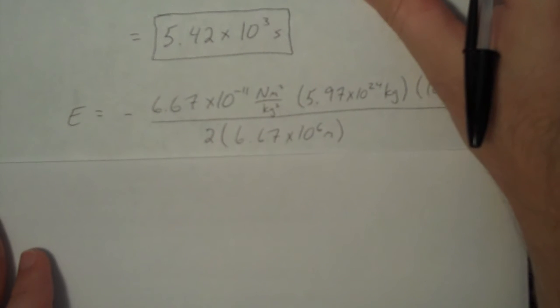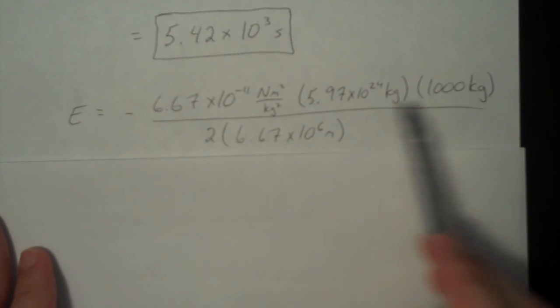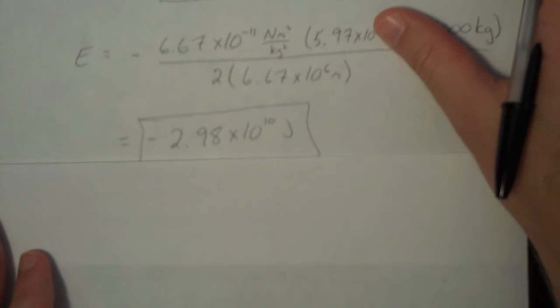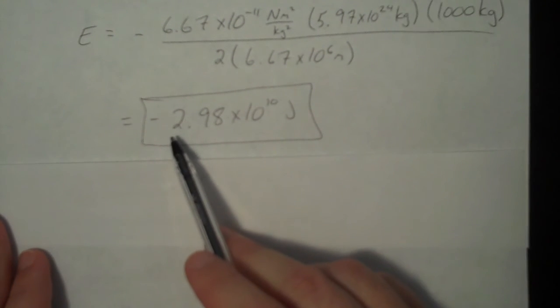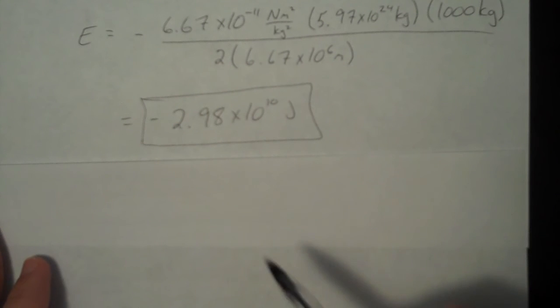And finally, what is the total energy? Well, just plugged in the values into the energy expression. And to three sig figs, it is negative 2.98 times 10 to the 10 joules.